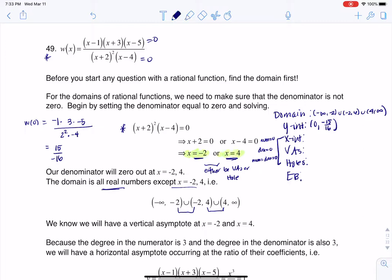When I set the numerator to zero, I'm looking at X minus one equaling zero, X plus three equaling zero, and X minus five equaling zero. So the three X-values I get from that are one, negative three, and five, and none of these,